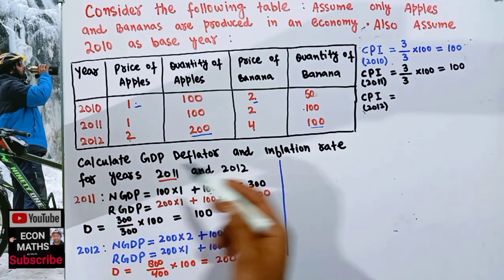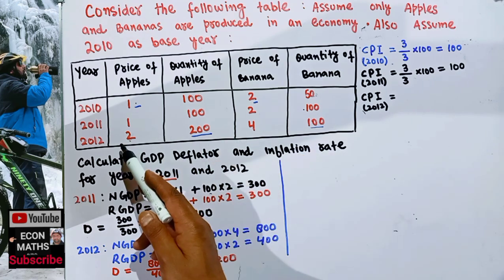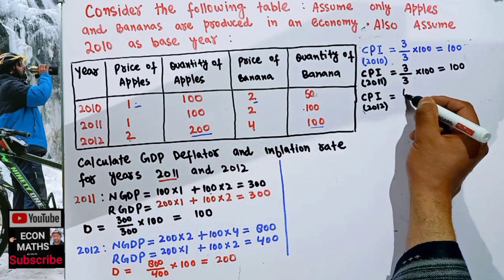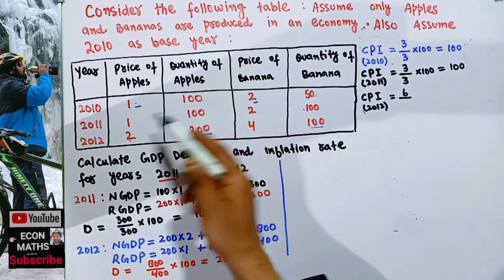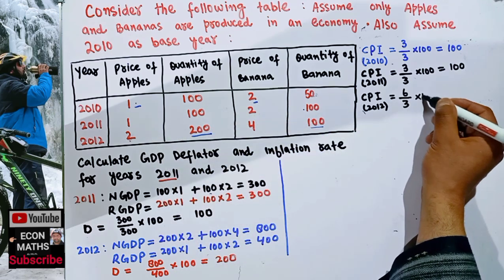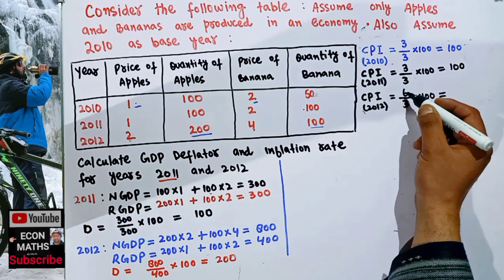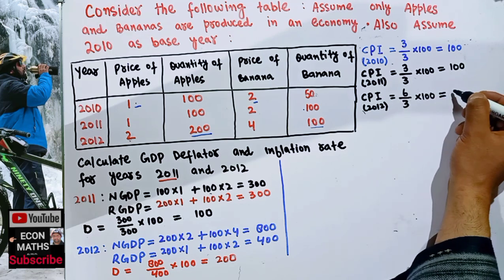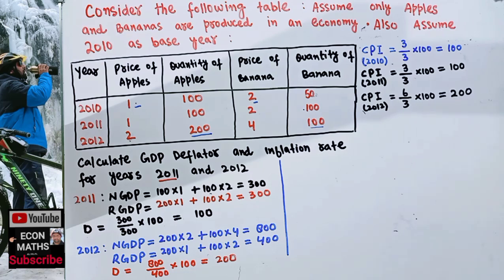For 2012, we add up the current year prices: 4 plus 2 equals 6. We divide by the base year prices: 2 plus 1 equals 3. Then multiply by 100. So 6 divided by 3 is 2, times 100 gives us a CPI of 200 for 2012.